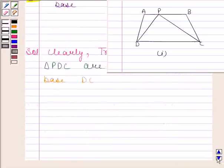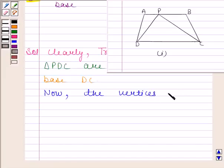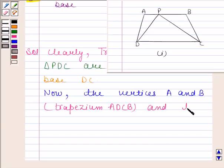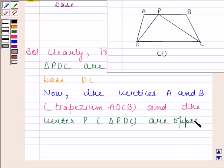Let's now verify point B. The vertices A and B of trapezium ADCB and the vertex P of triangle PDC are opposite to the base DC.